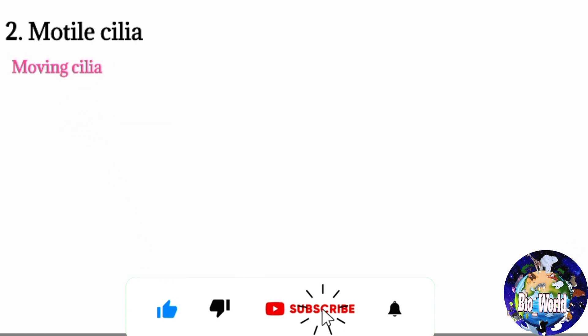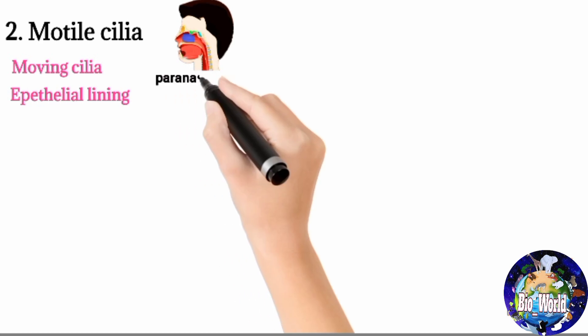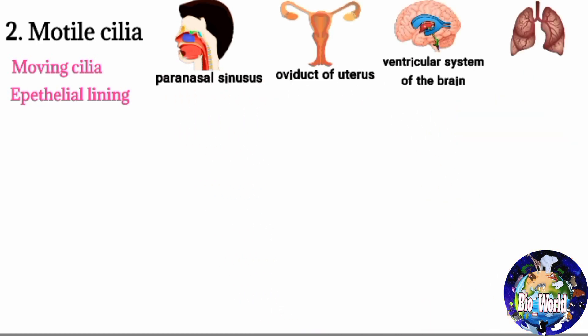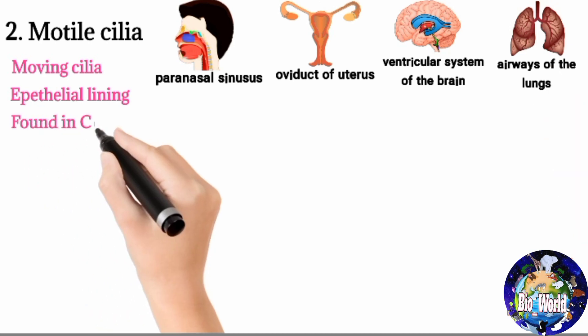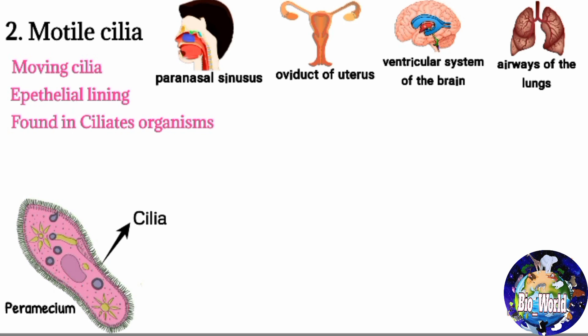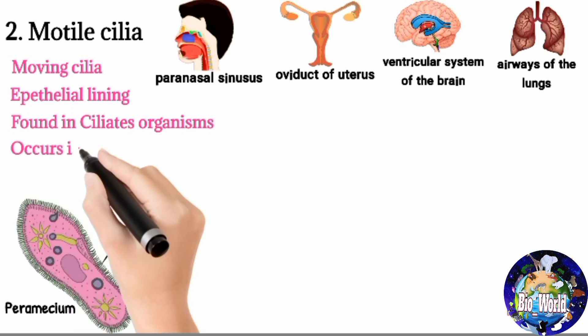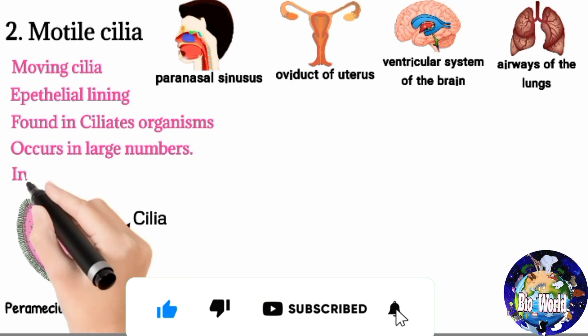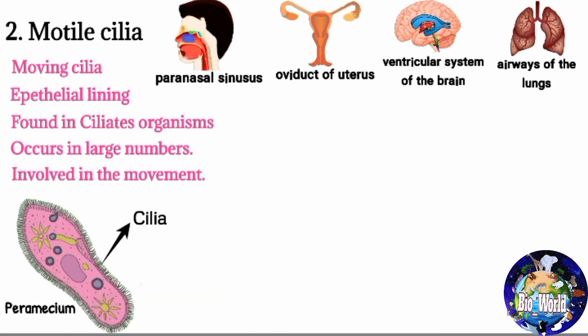Motile cilia are moving cilia typically found on the specialized epithelial lining of the body, such as the paranasal sinuses, oviduct of the uterus, ventricular system of the brain, and airways of the lungs. Motile cilia are also found in ciliates — organisms that use them for locomotion or to move liquid through their surface. Motile cilia occur in large numbers and move in a coordinated beating movement.